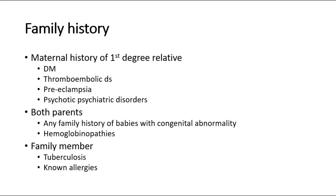For family history, especially the maternal history of first-degree relatives such as the patient's mother or siblings — any issue of diabetes mellitus, thromboembolic disease, preeclampsia during pregnancy, or any psychiatric disorders. This is important because these are risk factors she might have for her pregnancy. For family history of both parents, were there any relatives with babies who have congenital abnormality, haemoglobin or haemoglobinopathy issues? And among family members, did anyone have tuberculosis or known allergies?